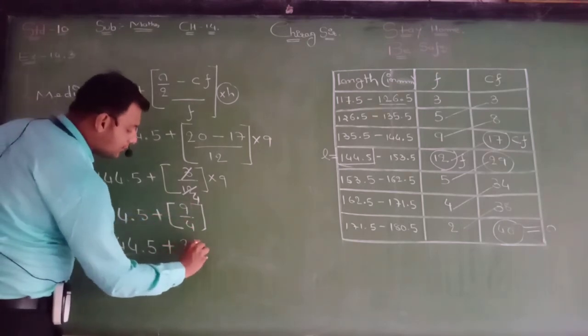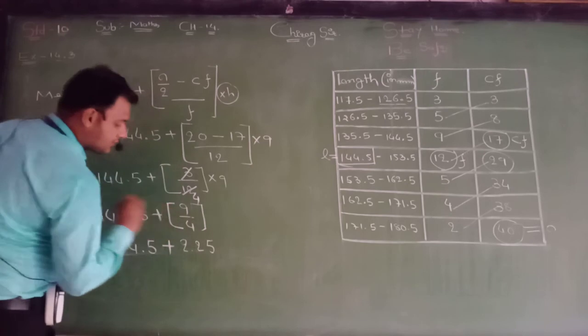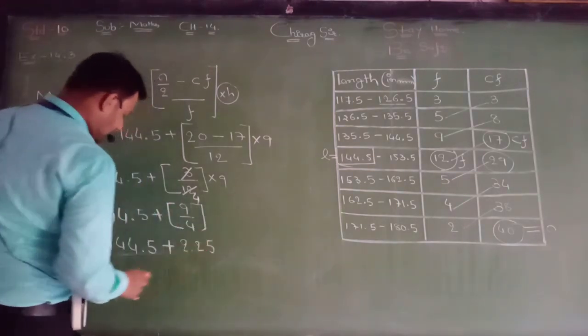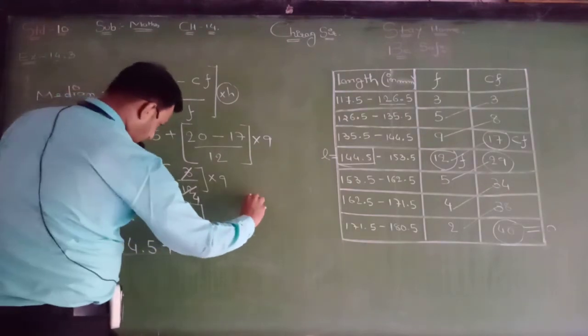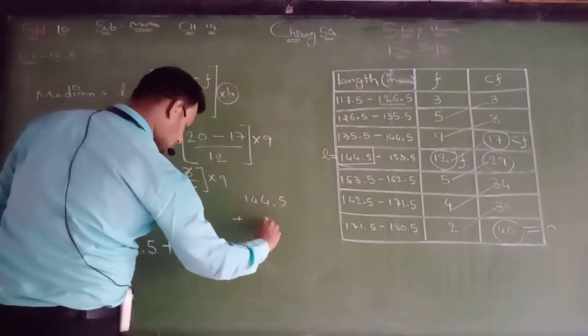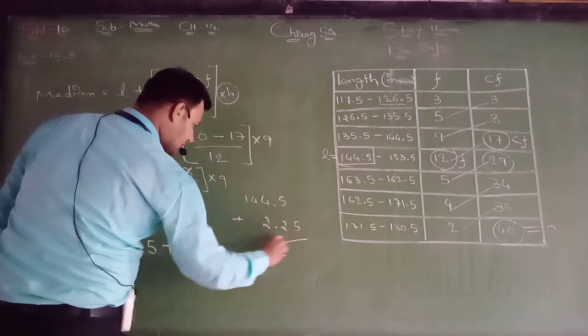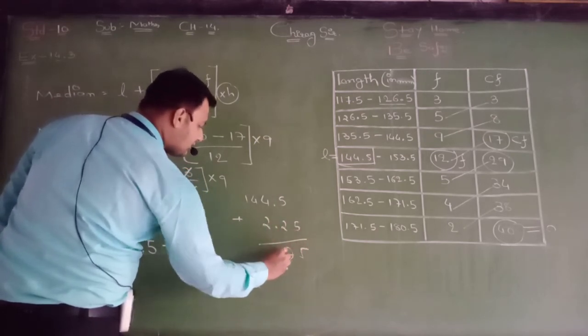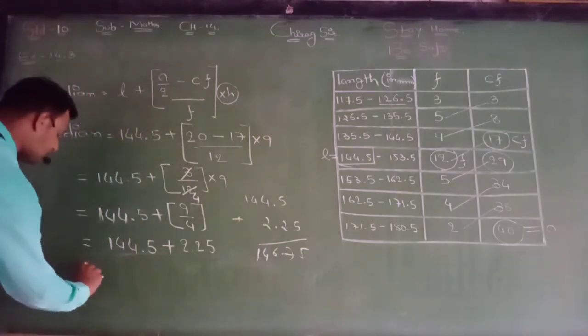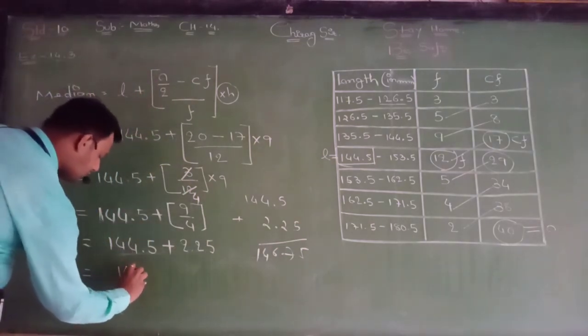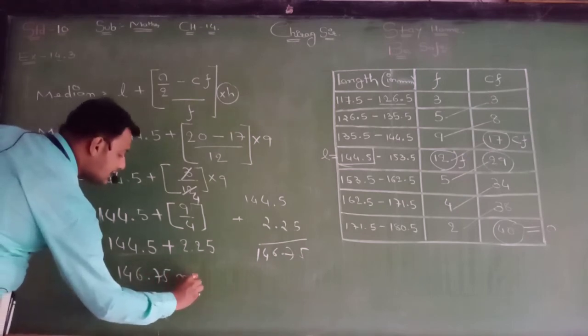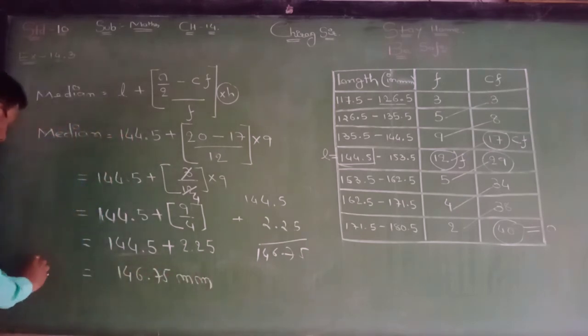Now add this thing. The last answer: 144.5 plus 2.25, that is 75. Means 146.75, 146.75 millimeter median.